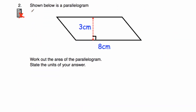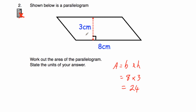Let's have a look at question number two. It says: shown below is a parallelogram with a base of eight centimeters and a height of three centimeters. We're asked to work out the area. So area equals base times height: eight multiplied by three is 24. We must make sure we put our units on — because we're dealing with area and centimeters, it's 24 centimeters squared.